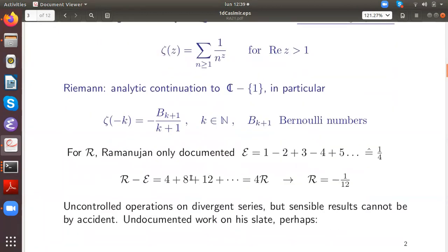In his notebook, he only documented one intermediate step, which is this alternating series epsilon to which he assigns the value one-fourth. If you substitute it into this difference R minus epsilon, you obtain in fact four times R, and if you treat R as a finite constant, then it suggests this value of minus one-twelfth. So this looks like a sequence of uncontrolled operations on divergent series, but the results make sense on three occasions, so this cannot be by accident.